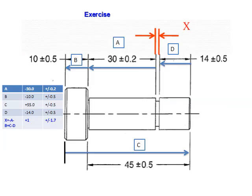It is an example of a stack analysis. Here, X is the gap we have to find out. What is the minimum and maximum gap or distance? So A, B, C, D are labels of the distances in the stack path. And the stack calculation is done mathematically. The gap is equal to minus A minus B plus C minus D. The answer is plus 1 with a tolerance variation of plus minus 1.7.